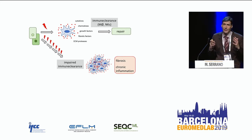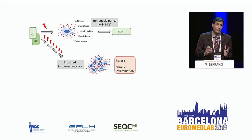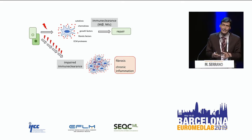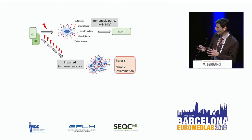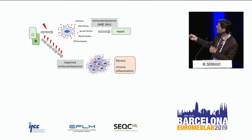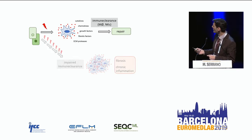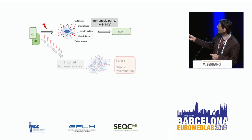This is the typical combination of cellular defects that happen in many diseases: the presence of senescence, the presence of fibrosis, and the presence of chronic inflammation. I'm going to talk a little bit about what we are doing in this area.